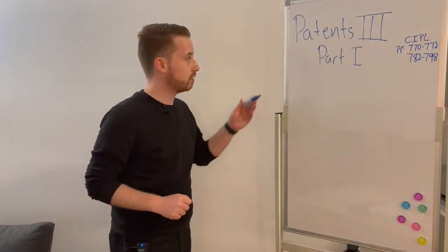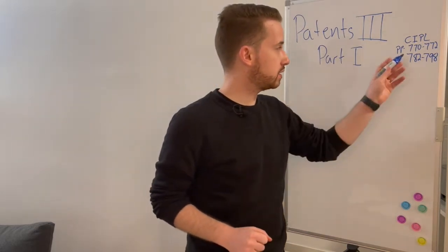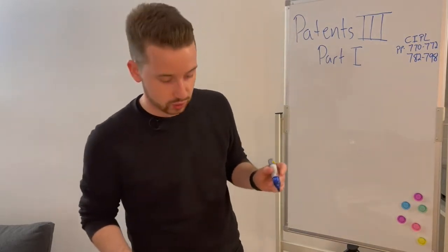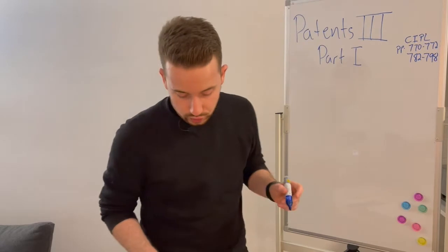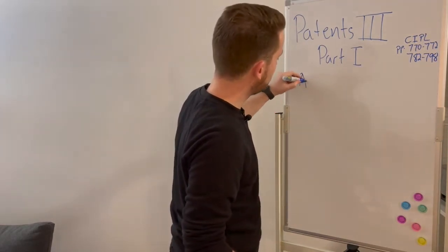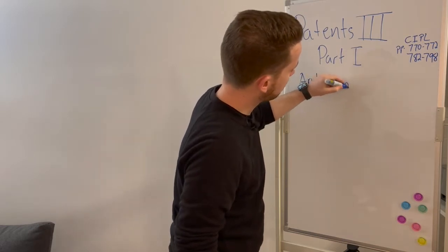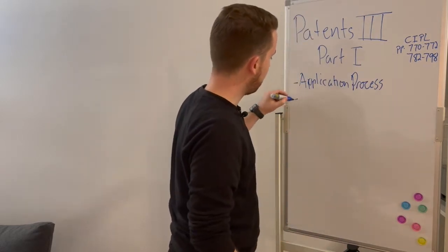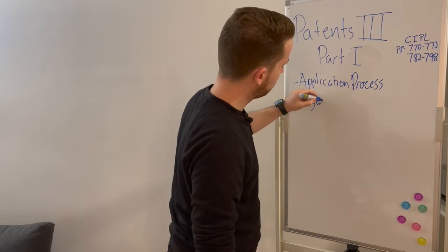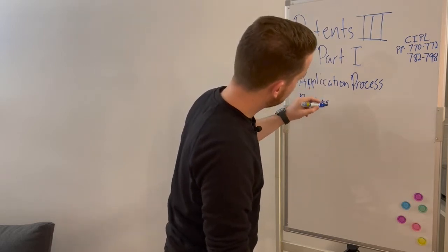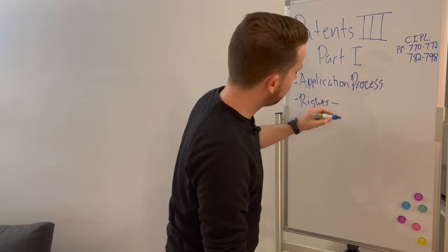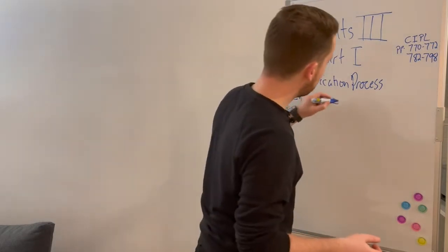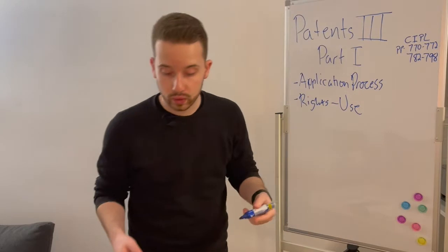Welcome back — this is Patents 3, Part 1. We're in the textbook at pages 770 to 772 and 782 to 798. In this capsule we're going to look at the application process to get a patent, then what rights the Patents Act confers upon patent holders, and specifically how to determine whether someone has infringed upon those rights — particularly in the context of what it means to 'use' the invention.